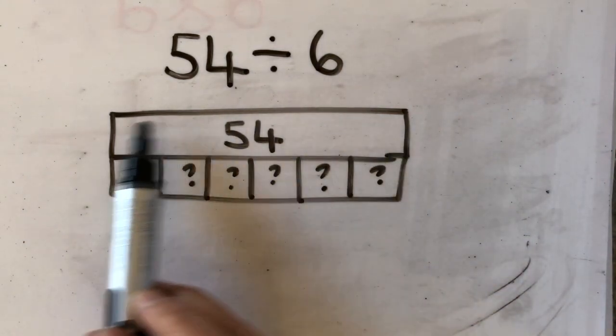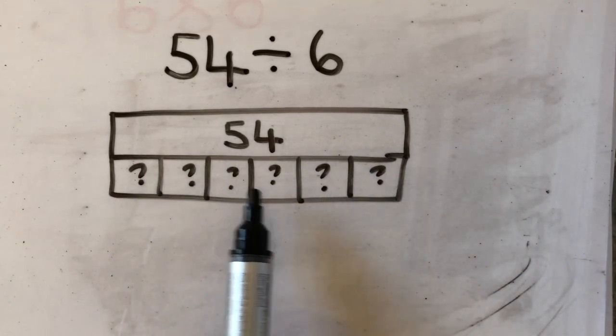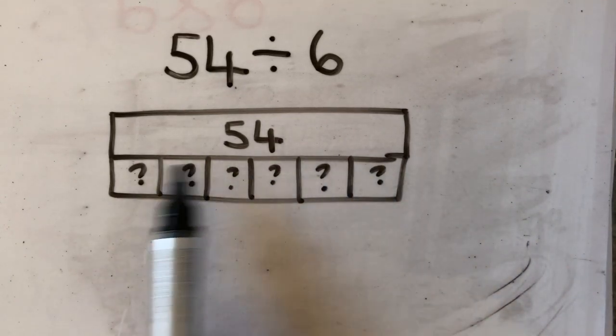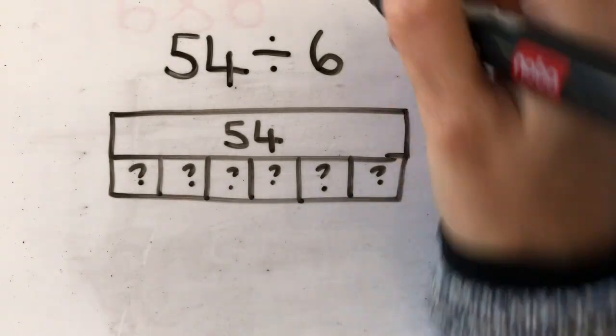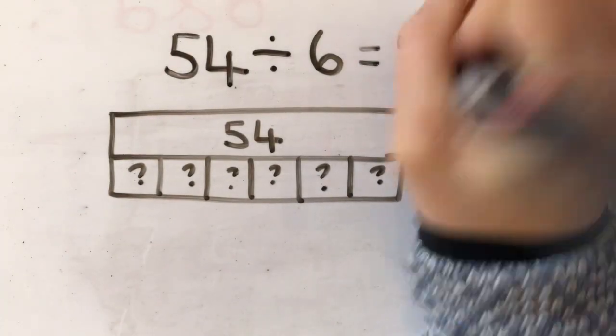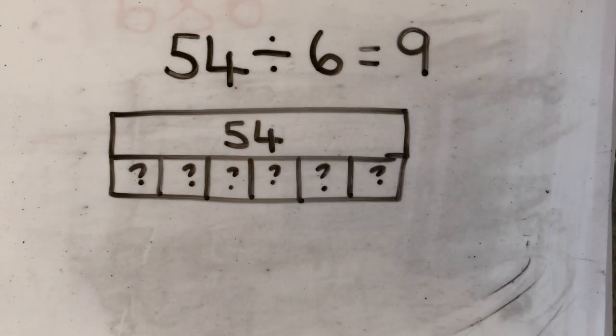So I've got 54 as my total and I know my number of groups. I've got six groups but I don't know the value of each group. So then I can work it out. I can share it and I know that 54 divided by 6 equals 9.